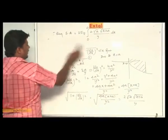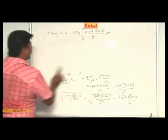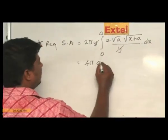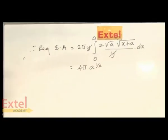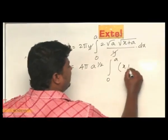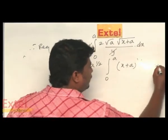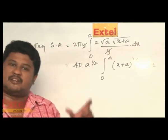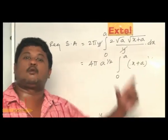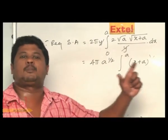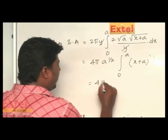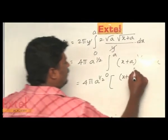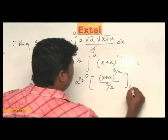The y terms cancel. We get 4π, taking root a common outside — this becomes a to the power 1/2 — integral from 0 to a of (x plus a) to the power 1/2 dx. Applying the integration formula x^n gives x^(n+1)/(n+1): (x plus a)^(1/2) integrates to (x plus a)^(3/2) divided by 3/2. So we have 4π a^(1/2) times [(x plus a)^(3/2) divided by 3/2] from 0 to a.